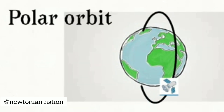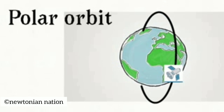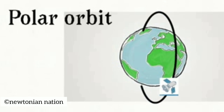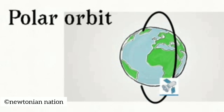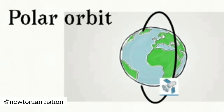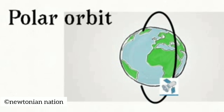Polar Orbit — this is when the satellite rotates in a path that takes it over the north-south pole and perpendicular to the equator. It is elliptical in shape, and the angle of inclination is 90 degrees.